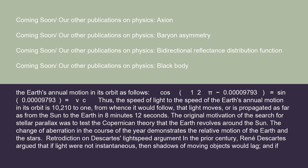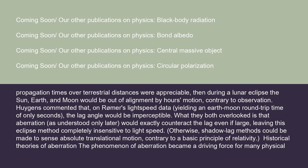The original motivation of the search for stellar parallax was to test the Copernican theory that the Earth revolves around the Sun. The change of aberration in the course of the year demonstrates the relative motion of the Earth and the stars. René Descartes argued that if light were not instantaneous, then shadows of moving objects would lag, and during a lunar eclipse the Sun, Earth, and Moon would be out of alignment by an hour's motion, contrary to observation. Huygens commented that on Rømer's light speed data, yielding an Earth-Moon round-trip time of only seconds, the lag angle would be imperceptible. What they both overlooked is that aberration would exactly counteract the lag, even if large, leaving this eclipse method completely insensitive to light speed. Otherwise, shadow lag methods could be made to sense absolute translational motion, contrary to a basic principle of relativity.